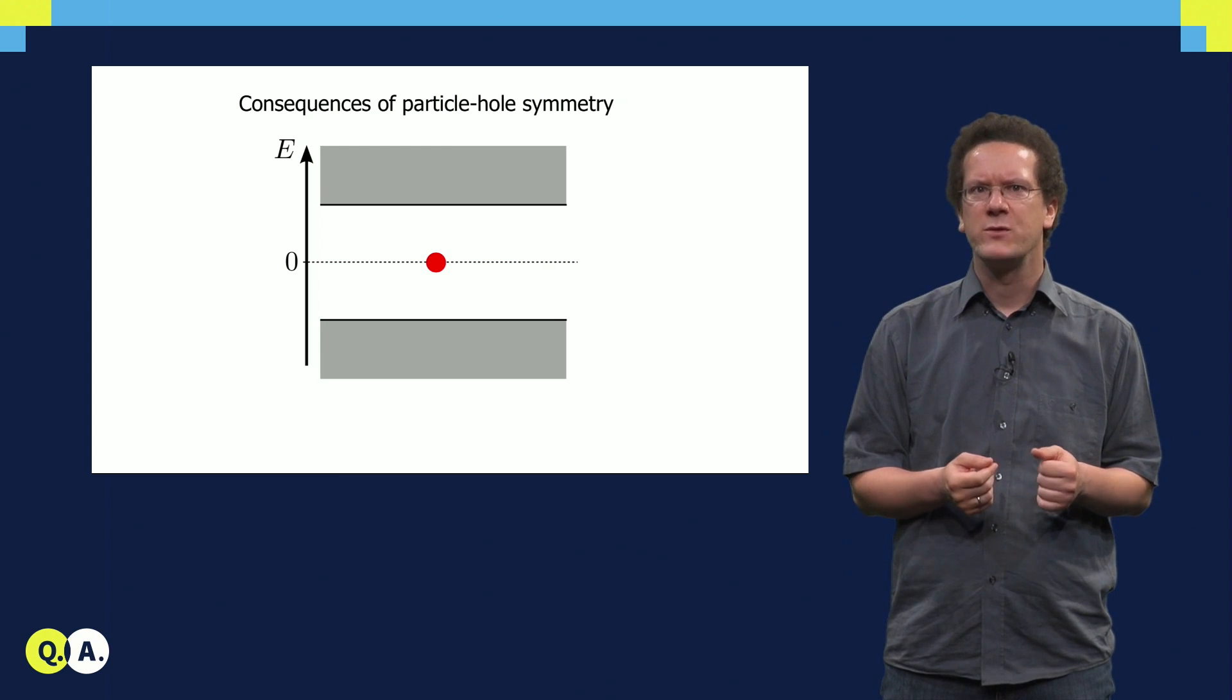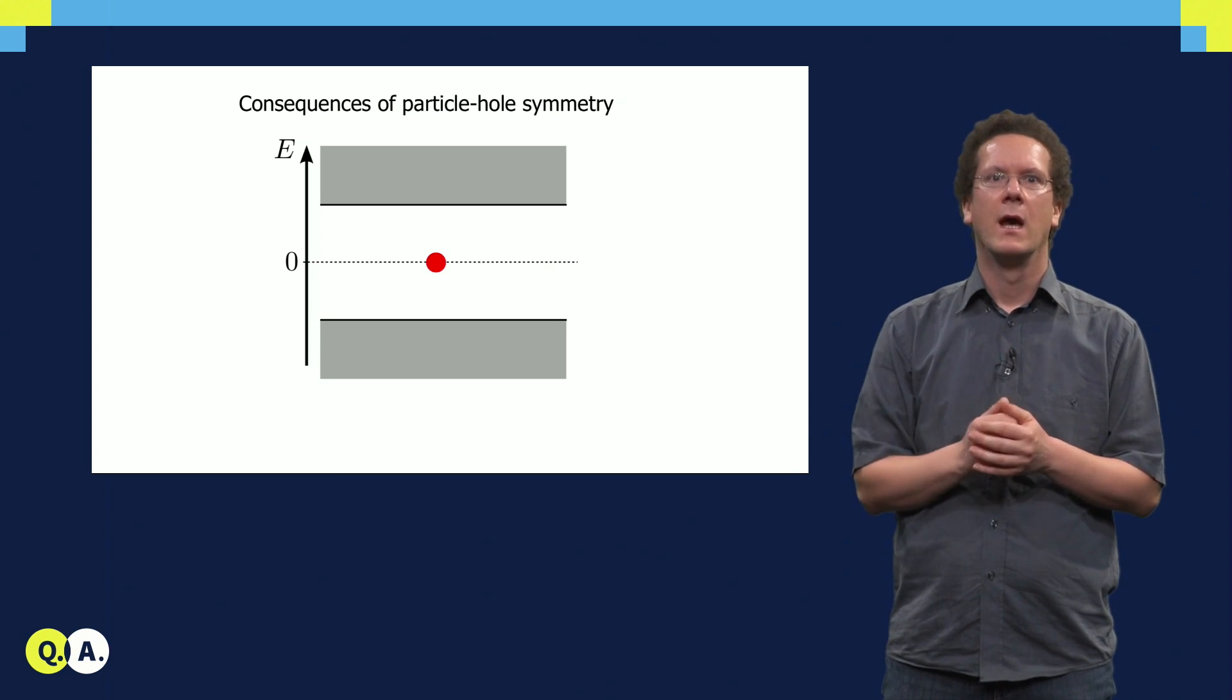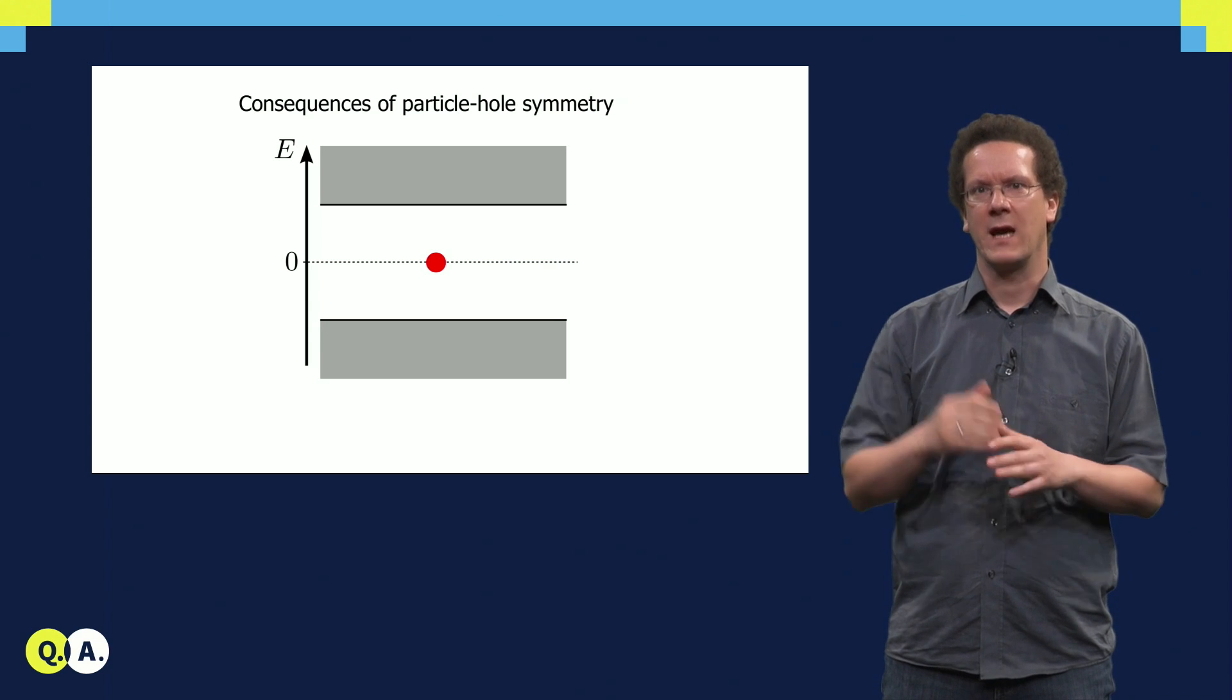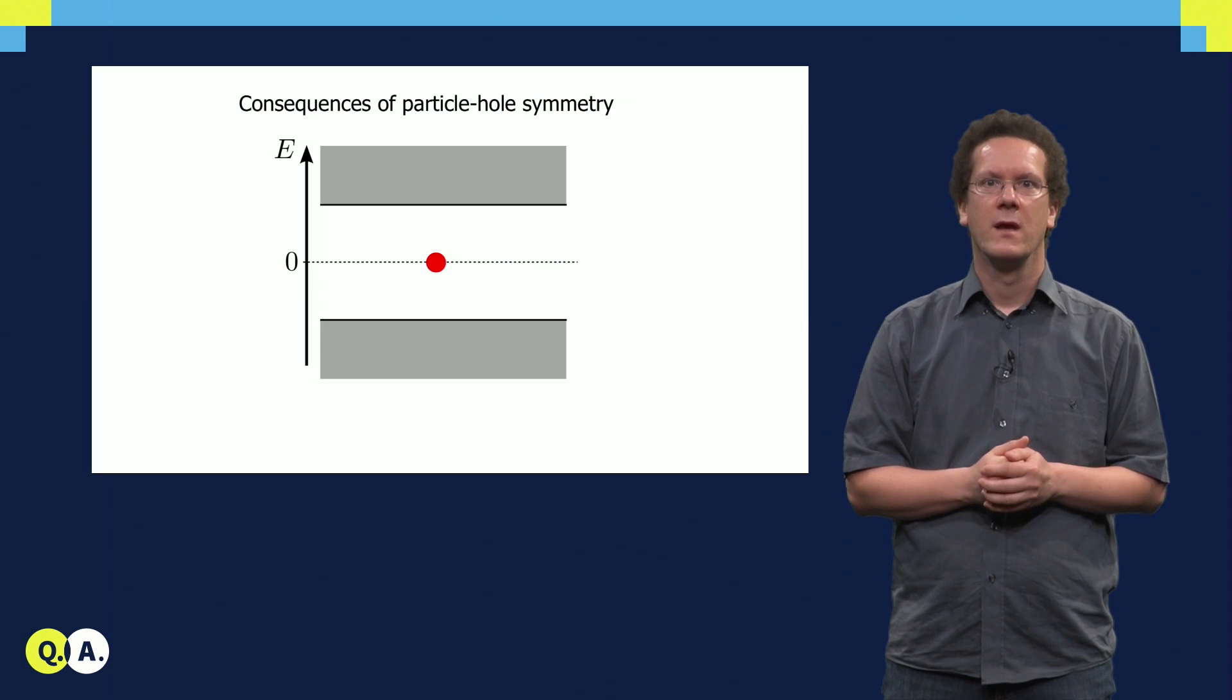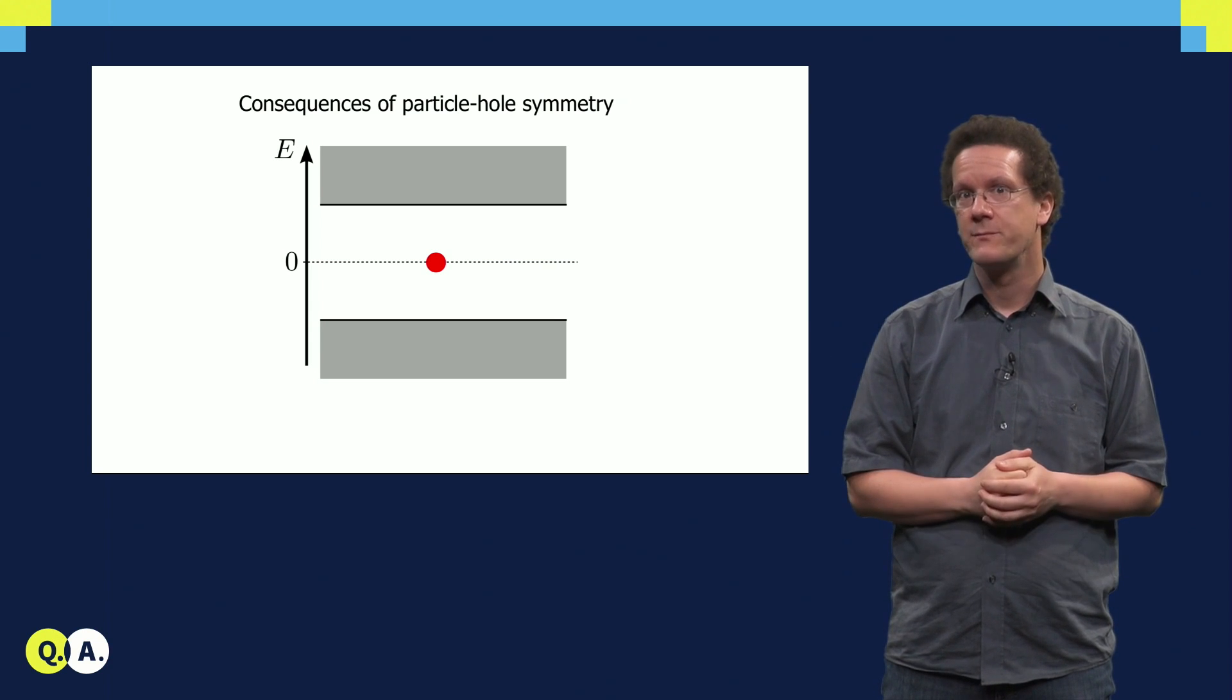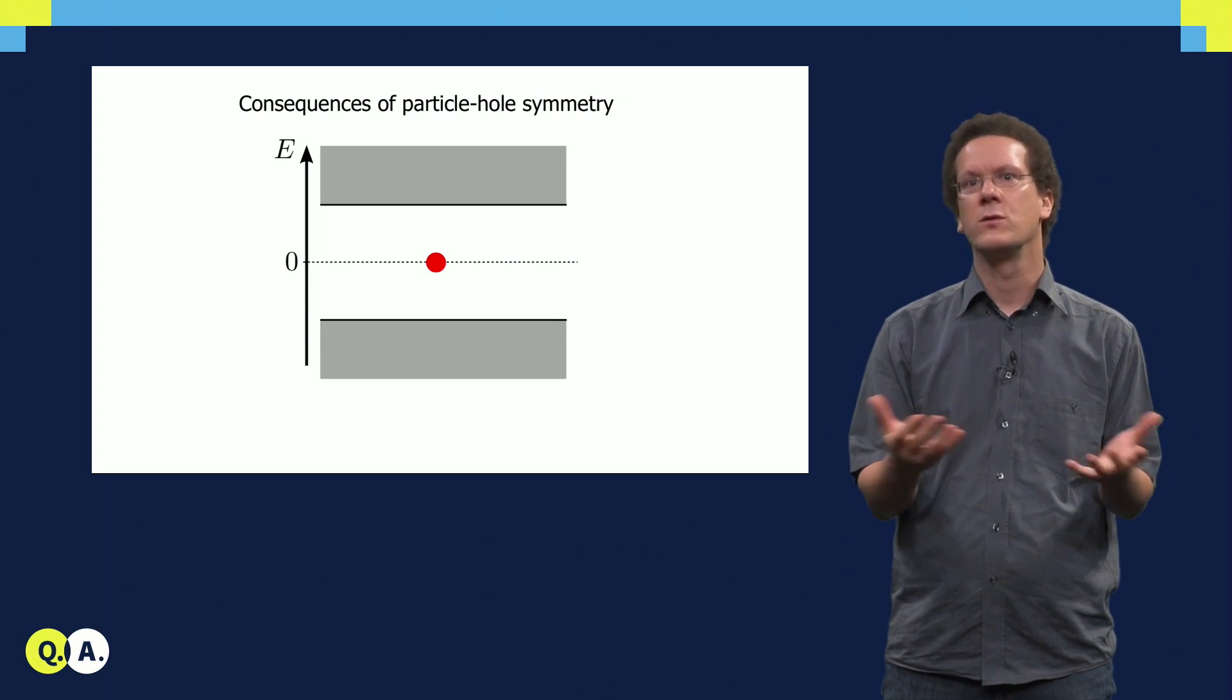Particle-hole symmetry means that the energy spectrum must be symmetric around zero energy. The spectrum has a superconducting gap, shown as a white region in the slides. If you have one state at zero energy, one Majorana bound state, then this state is protected and has to remain at zero energy, regardless of what kind of perturbations you do to your system.